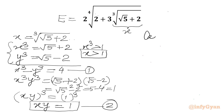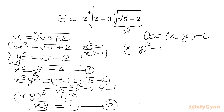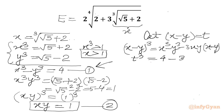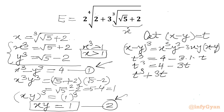Now let x minus y equal to t. We consider the identity (x minus y) cubed, which equals x cube minus y cube minus 3xy times (x minus y). So LHS will be t cube. x cube minus y cube as per equation 1 is 4. Minus 3 times xy, which is 1 from equation 2, times (x minus y) which is t. So I can write t cube equals 4 minus 3t, or t cube plus 3t minus 4 equals 0.